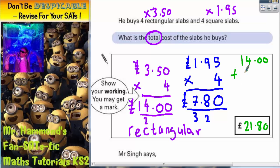£14, add £7.80. So 0 plus 0 is 0. 0 plus 8 is 8. 4 plus 7 is 11, carry the 1. 1 plus the 1 we carry is 2. So yeah, it is indeed £21.80.